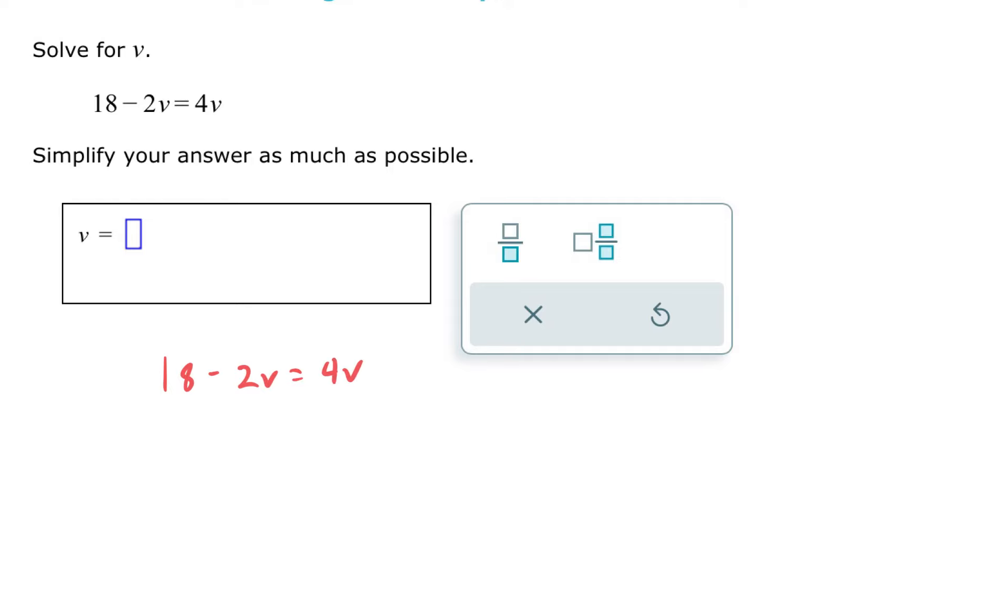We do have like terms. 2v and 4v are like terms. They're the same variable, but they're on opposite sides. And I want my variables on one side and I want my constants, meaning our whole numbers or fractions or decimals, all on the other side. So variables on one side, constants on the other side.